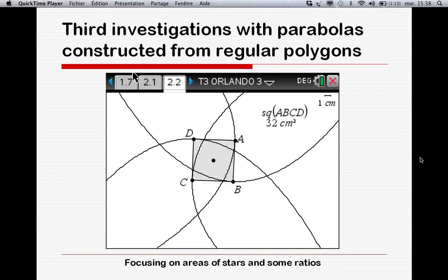In this part we will investigate the areas of stars like this one, curvilinear triangles and squares, with the help of regular polygons and their associated parabolas. The polygons will be in this part only equilateral triangles and squares.